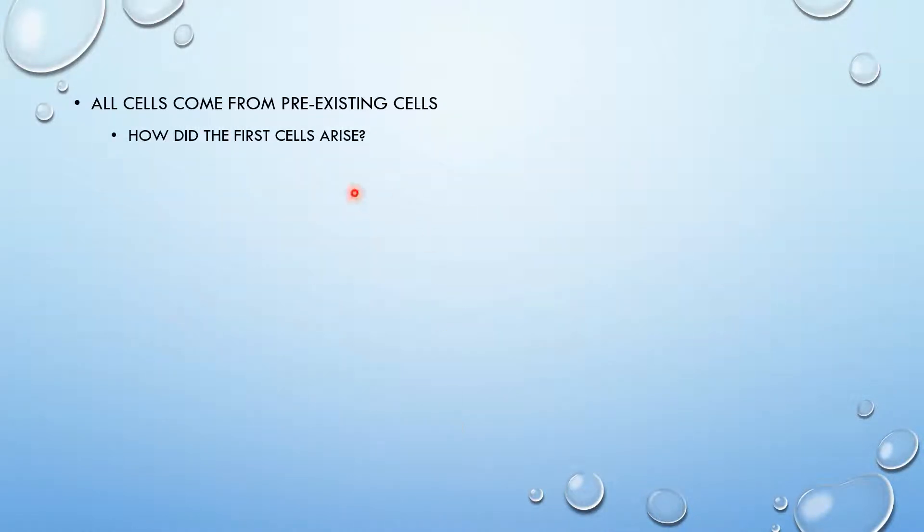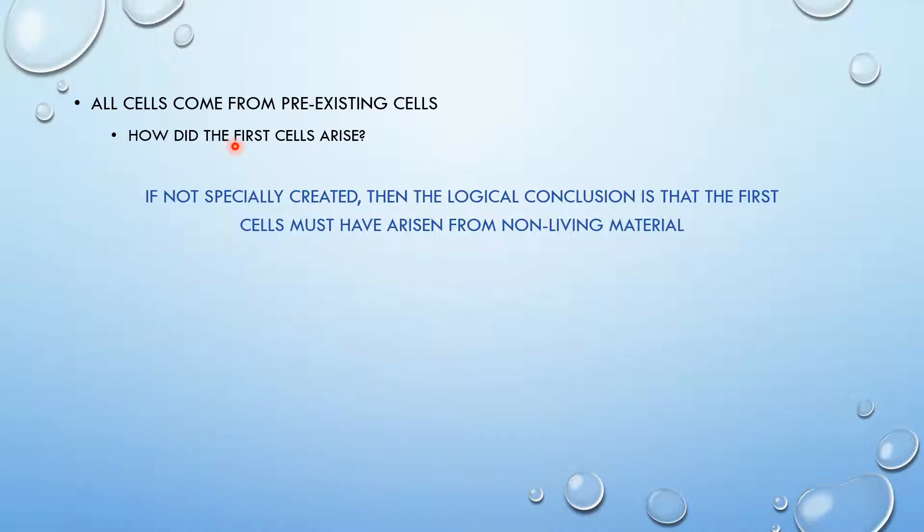Okay, so how did the first cell arise then? Because if all cells come from pre-existing cells, then there had to be, at one point, the first cell ever. But where did that come from? The consensus is, if not specially created, the first cell must have arisen from non-living material. And what I mean by specially created is created by God or by some heavenly figure that is so divine to us. But the scientific conclusion is that the first cells must have arisen from non-living material.